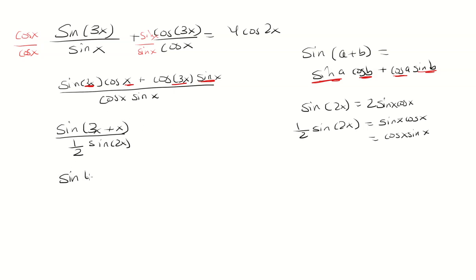Now, 3x plus x is 4x. And then we're dividing by 1 half, which is the same thing as multiplying by 2. And then in the denominator, we have sine 2x.